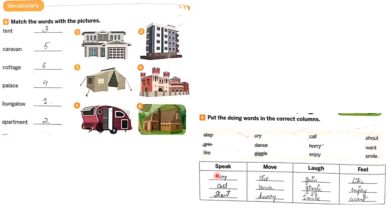Now we have to put the doing words in the correct columns. The words are given and we have to sort them. Under 'speak': cry, call, shout. Under 'move': step, dance, hurry. Under 'love': grin, giggle, smile. Under 'feel': like, enjoy.